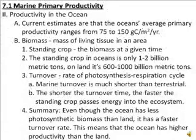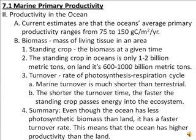Now let's focus on productivity in the ocean itself. Current estimates are that the ocean's average primary productivity ranges from 75 to 150 grams of carbon produced per meter squared per year. Keep in mind that the ocean is several million square meters big — that is a lot of carbon produced on the ocean surface each year.